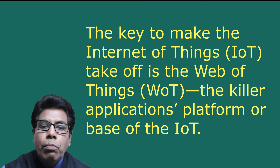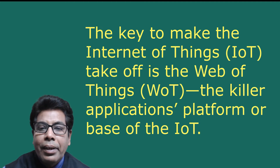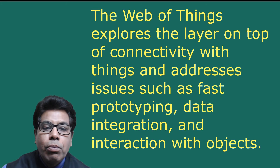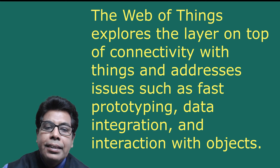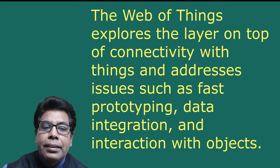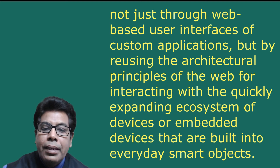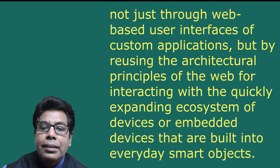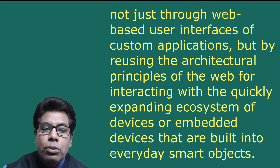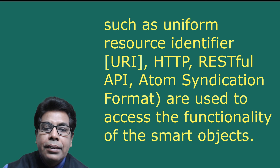Web of things versus Internet of Things: the key to make the IoT take off is the web of things — the killer application platform or base of the IoT. WoT is the next logical step in IoT evolution towards global networks of sensors and actuators, enabling new applications and providing new opportunities. The web of things explores the layer on top of connectivity with things, addressing issues such as fast prototyping, data integration, and interaction with objects. Because the web is omnipresent and flexible, it has become an excellent protocol for interacting with embedded devices, and WoT is a vision where things become seamlessly integrated into the web.